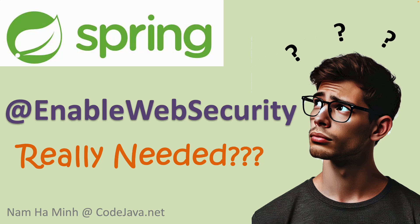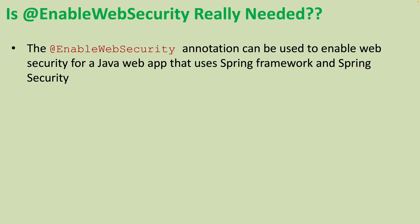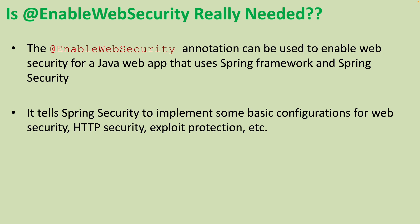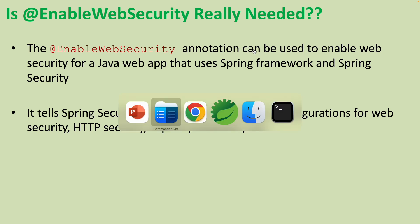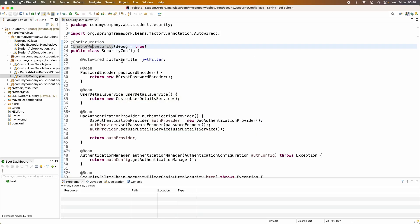In this video, I'd love to help you find the answer to the question: is the @EnableWebSecurity annotation really needed in the Spring framework? Have you noticed that when you forget to use this annotation in your Spring project, the security of your Spring application still works as expected? So what is the truth — is this annotation really needed or not? The @EnableWebSecurity annotation can be used to enable web security for web applications that use the Spring framework and Spring Security. It tells Spring Security to implement some basic configurations for web security, HTTP security, exploit protection, etc.